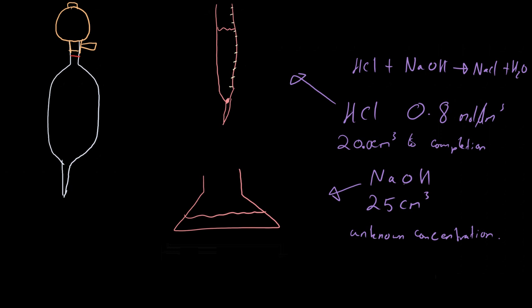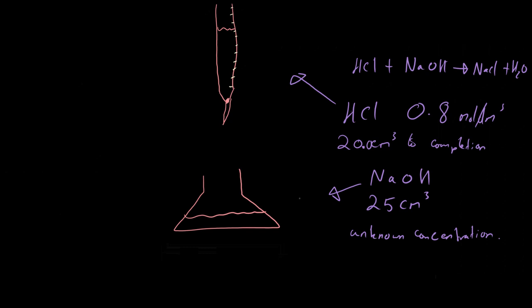We want to find the concentration of sodium hydroxide. From the equation HCl + NaOH → NaCl + H₂O, the molar ratio between HCl and NaOH is 1:1, because there is a coefficient of 1 in front of each. This 1:1 ratio is important for the next step.